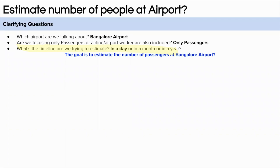The third question we can ask is about the timeframe. When we say we are estimating the number of people at the airport, what timeframe are we considering — is it a day, a month, or a year? Because the number of people would be different in all three scenarios. Let's assume we are going to calculate for a day. The goal of the problem is to estimate the number of passengers at Bangalore airport in a day.